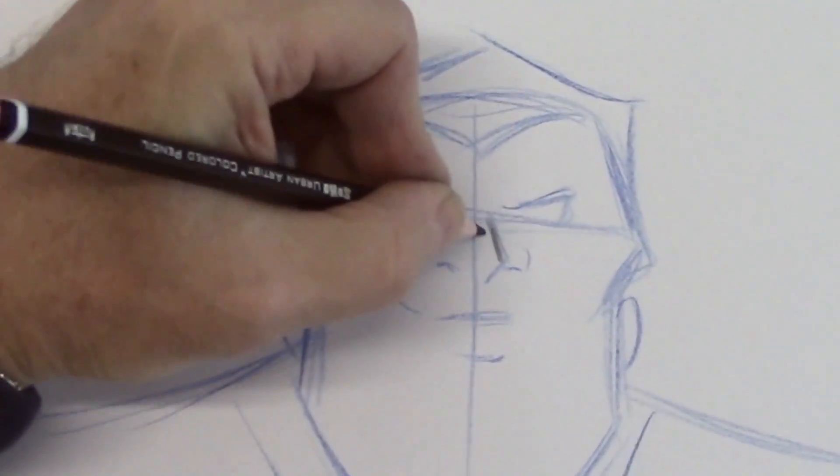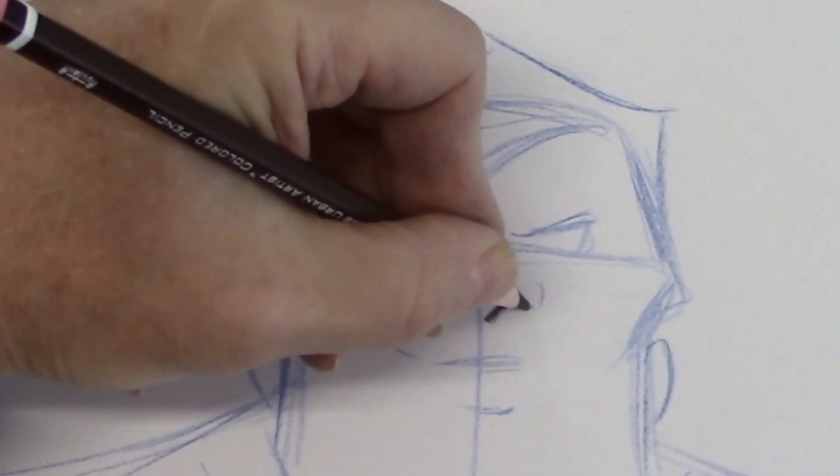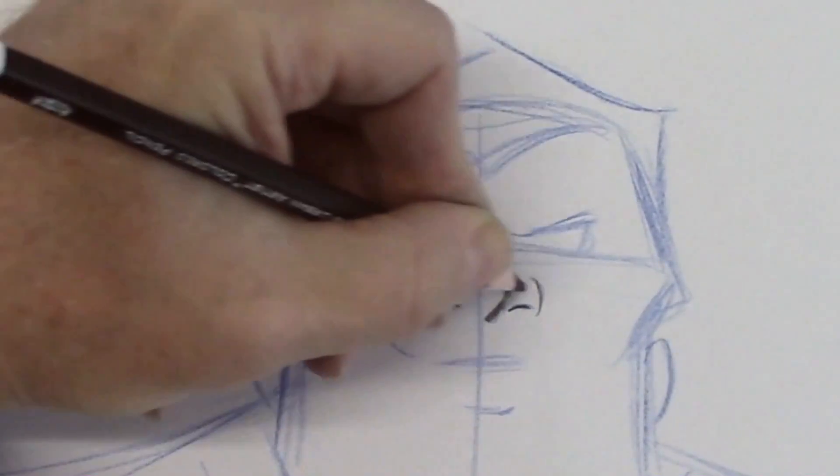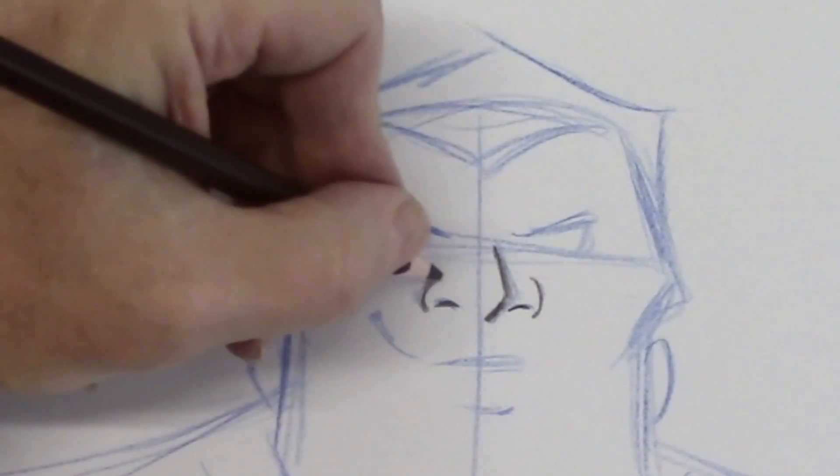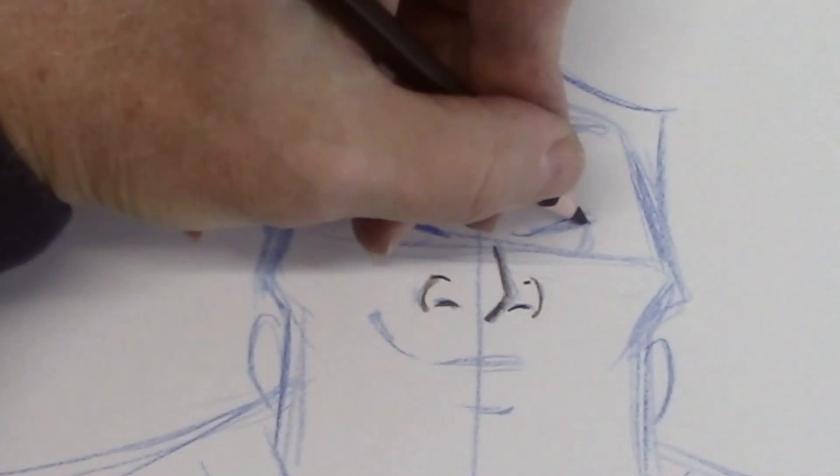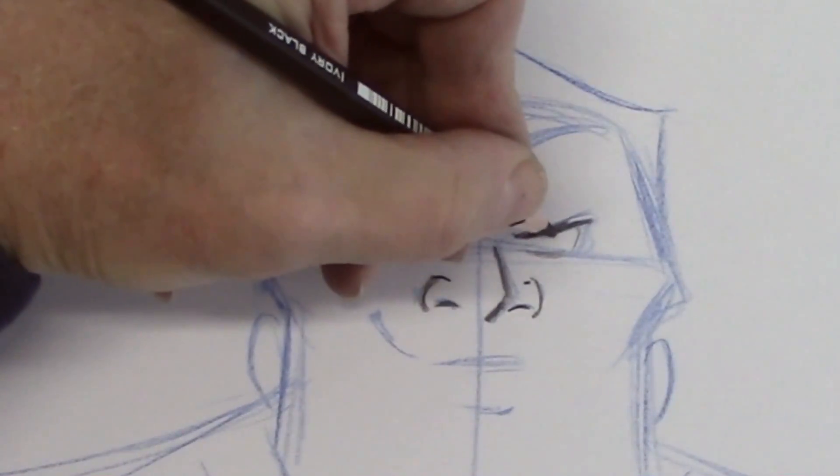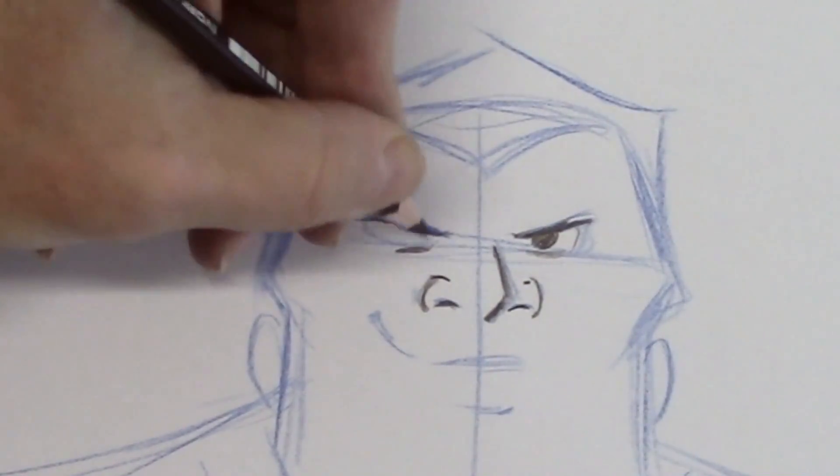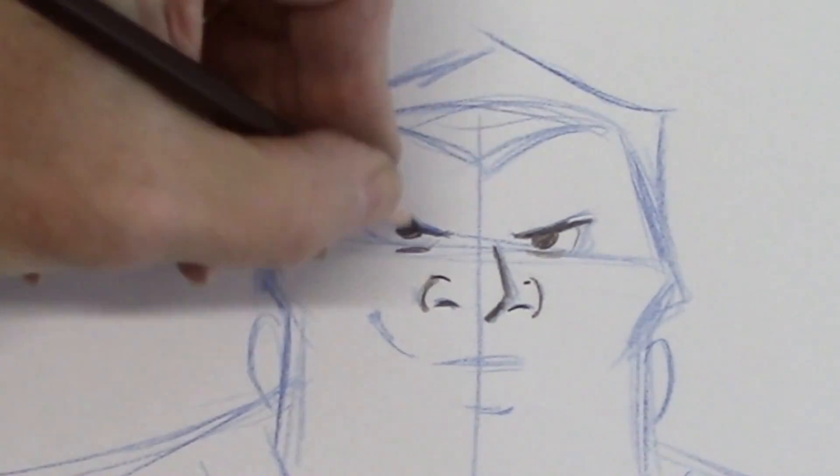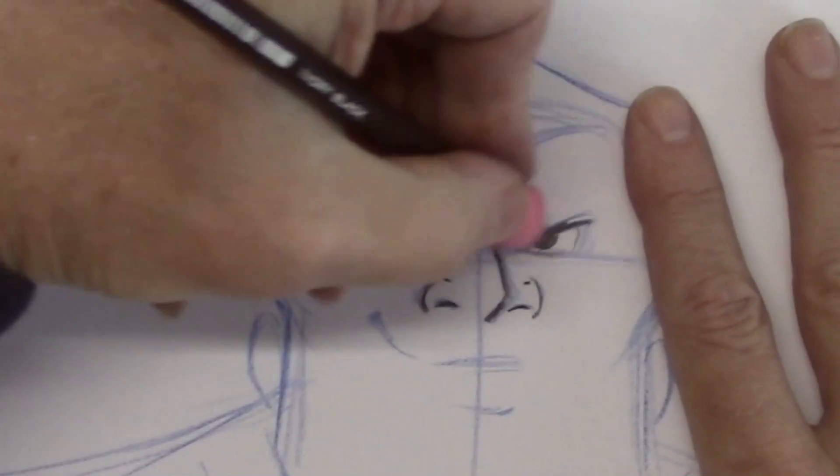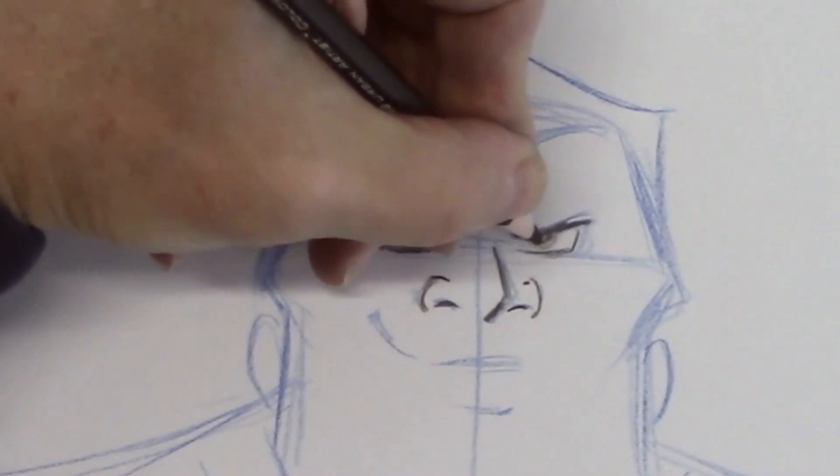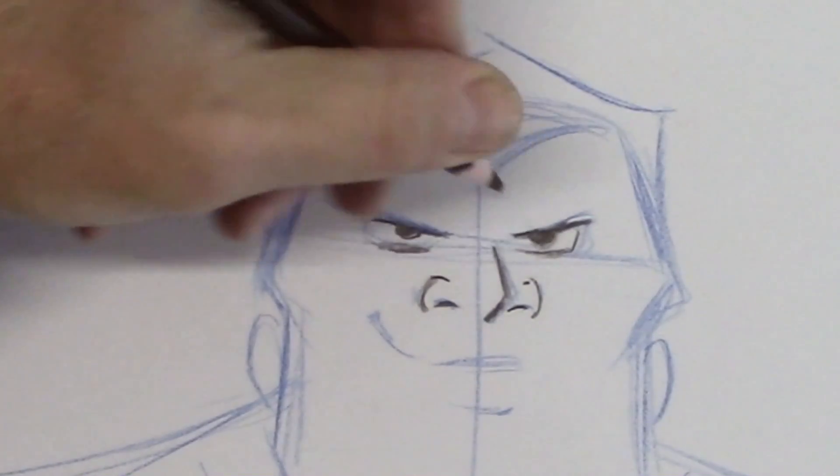So here is the nose, like that. And his nice little hello smile. Like so. This eye needs to be beadier. There we go. Nice beady, small eyes.